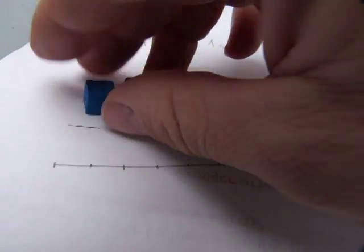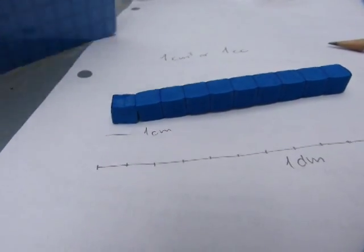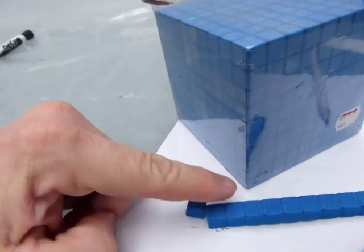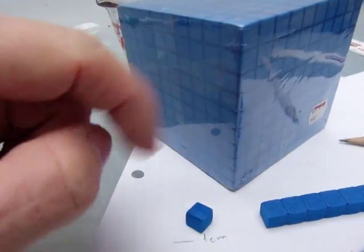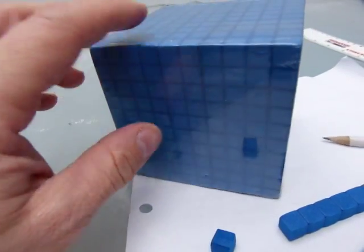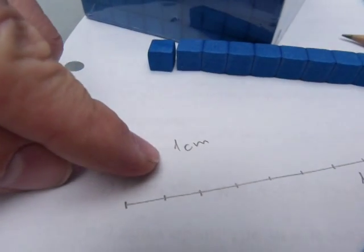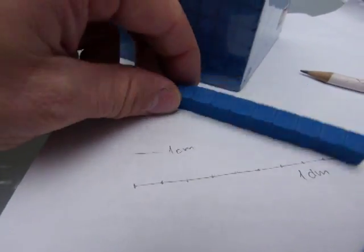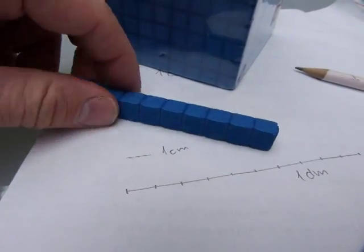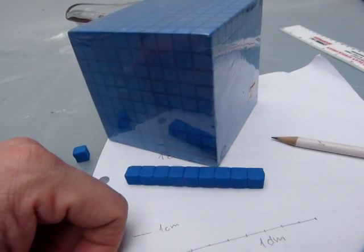But ten of these cubic centimeters don't make a cubic decimeter. A cubic decimeter is a cube with a length of one decimeter, a width of one decimeter, and a height of one decimeter. This is a cubic decimeter. And even though ten linear centimeters will make one linear decimeter, ten of these cubic centimeters are not going to fill a cubic decimeter. It's nowhere near enough.